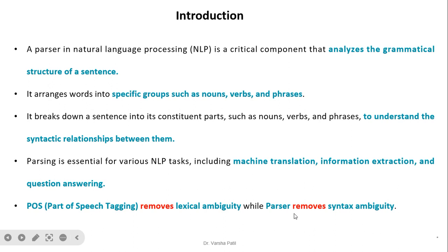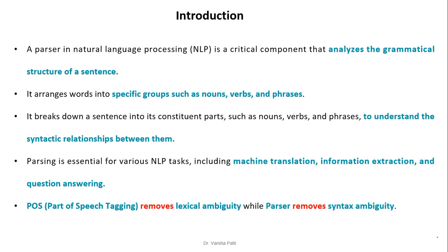Part-of-speech tagging removes lexical ambiguity, while parsers try to remove syntactic ambiguity. For example, based on the rules designed for a particular parser, it will accept the sentence if that sentence follows the parser rules. So it tries to remove maximum syntactic ambiguity.